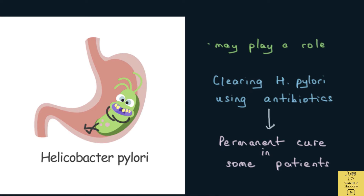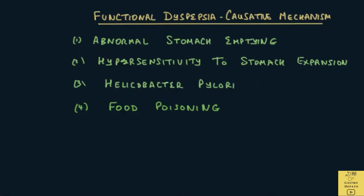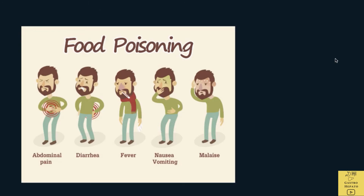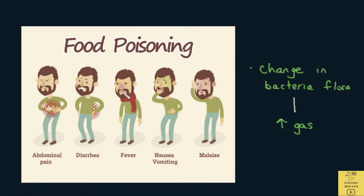Clearing the bacteria from the stomach using antibiotics results in a permanent cure in some patients. In some patients, the condition happens after a bout of food poisoning. This is believed to be due to a change in the composition of the bacteria in the intestines, resulting in excessive gas production. Functional dyspepsia can last for up to one year after food poisoning.